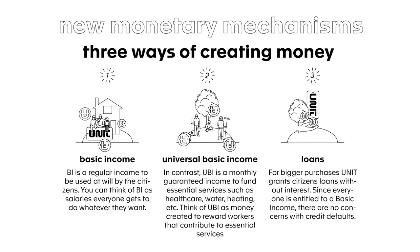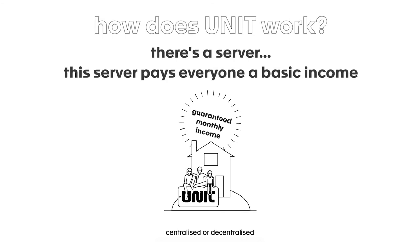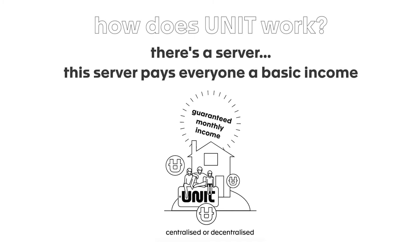The second way UNIT creates money is to reward citizens who work for public services — referred to here as UBI, universal basic income. The third way is through loans to allow citizens bigger purchases. Instead of a bank, there's a server — a smart ledger that creates and eliminates money according to a specific set of rules and registers transactions between users. The server can be centralized or decentralized. What is crucial to UNIT is the social contract it helps to enact: allowing governments to fund their public programs while still allowing space for private initiative.